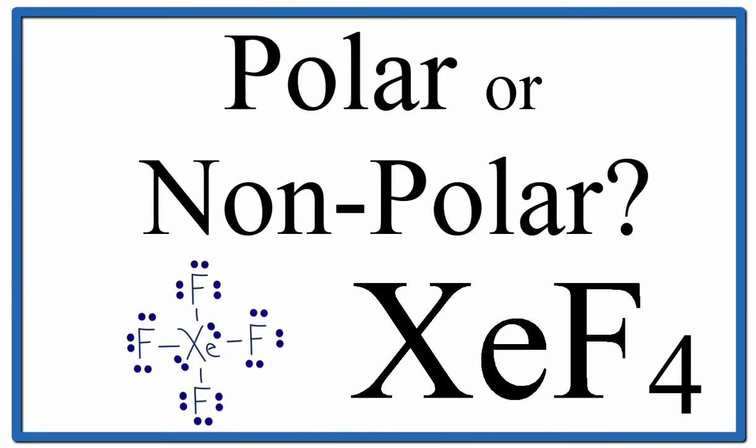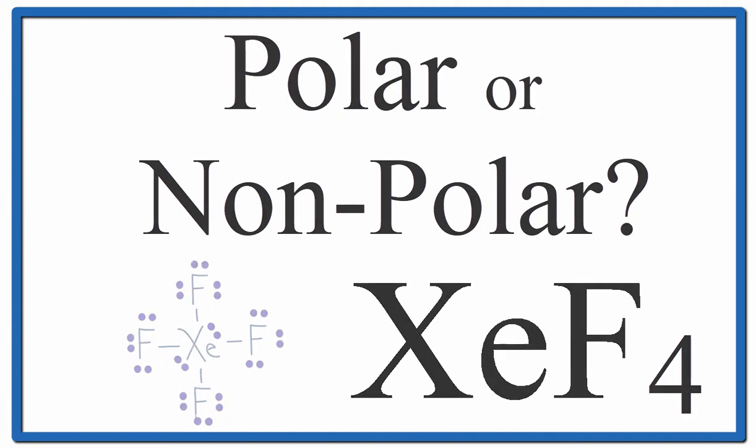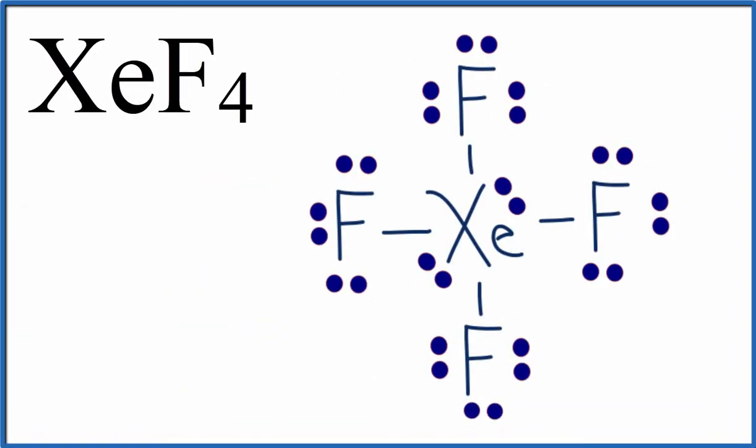So to figure out if this xenon tetrafluoride molecule is polar or nonpolar, we need to look at the Lewis structure. That tells us where the valence electrons are and then how the atoms are bonded and arranged around that central xenon atom there in the Lewis structure.